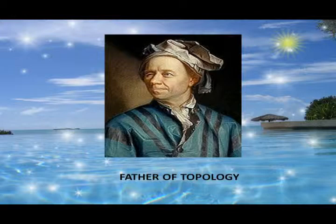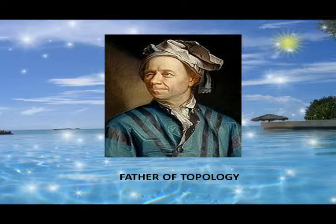Leonhard Euler was born on 15th April 1707 and died on 18th September 1783. He was a prolific mathematician and physicist who spent most of his life in Russia and Germany. He wrote 886 books in Mathematics. Euler is the father of topology.